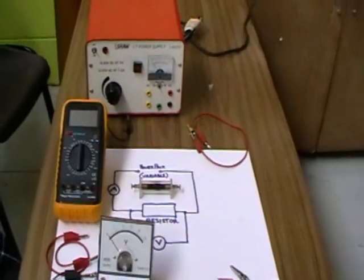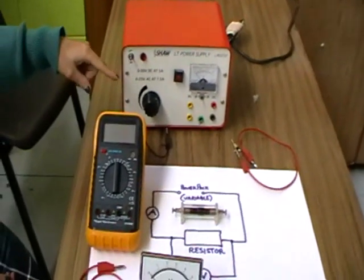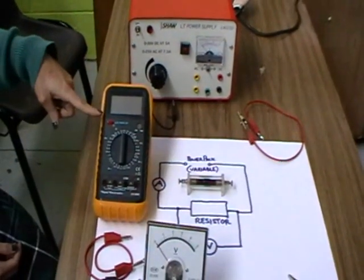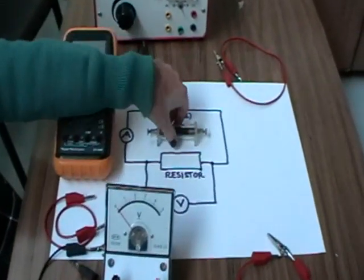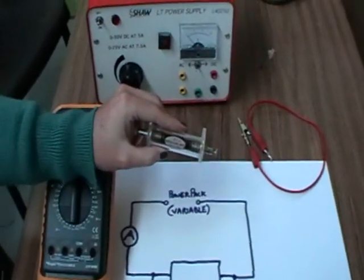A variable power pack, a digital ammeter to measure current, a voltmeter to measure potential difference, a resistor - in this case, a 20 ohm resistor.